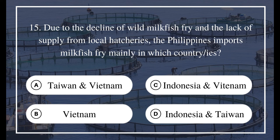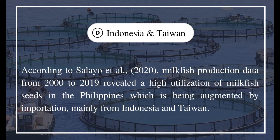Question 15: Due to the decline of wild milkfish fry and the lack of supply from local hatcheries, the Philippines imports milkfish fry mainly from which country or countries? A) Taiwan and Vietnam, B) Vietnam, C) Indonesia and Vietnam, D) Indonesia and Taiwan. The answer is D) Indonesia and Taiwan. According to Salayo et al. 2020, milkfish production data from 2000 to 2019 revealed high utilization of milkfish seeds in the Philippines, which is augmented by importation mainly from Indonesia and Taiwan.